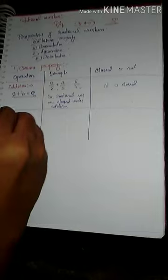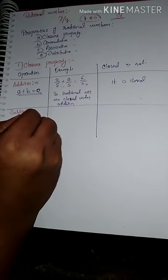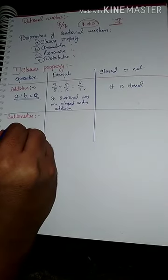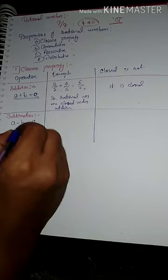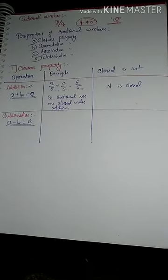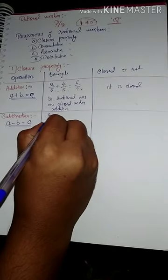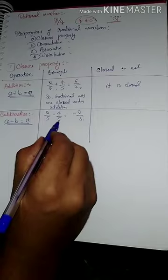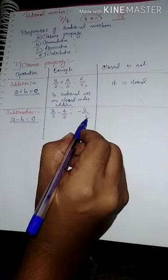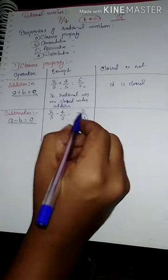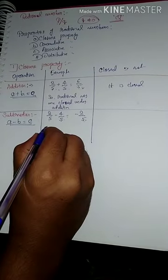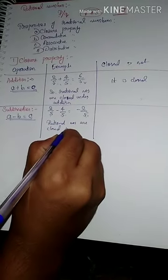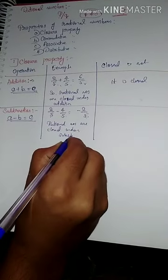The second operation is subtraction. If we subtract any two rational numbers, again we get a rational number — that is, a minus b equals c. For example: 2/5 minus 4/5 equals minus 2/5. Here, 2/5, 4/5, and minus 2/5 are all rational numbers. Therefore, rational numbers are closed under subtraction.